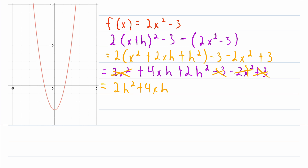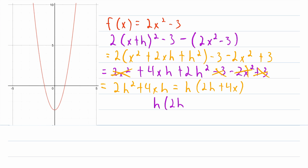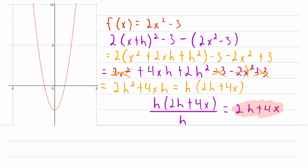Now all we have to do is divide by h to get our difference quotient. Both terms have a factor of h, so let's factor that out: h multiplied by 2h plus 4x. Now we divide by h, and the h's cancel out, leaving us with 2h plus 4x. As we would expect, the difference quotient is not constant. The average rate of change between two points depends on where you start — represented by x, the x-coordinate of our starting point — and how far away you go, represented by h.